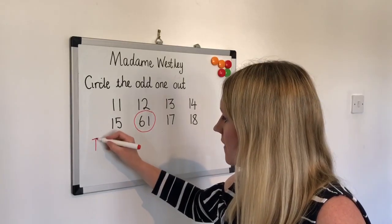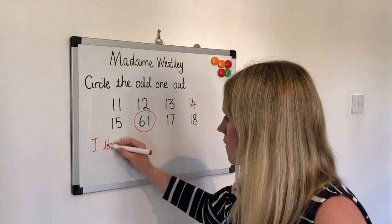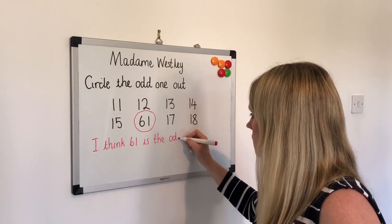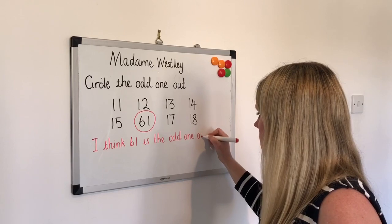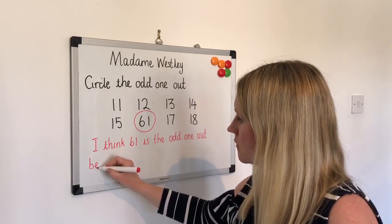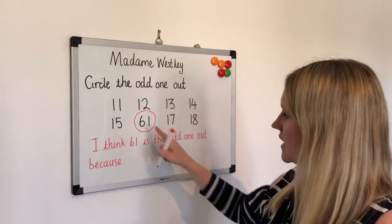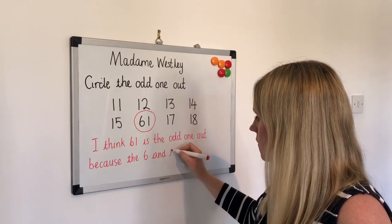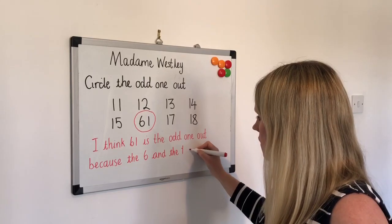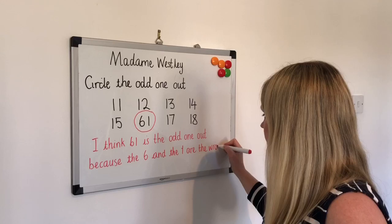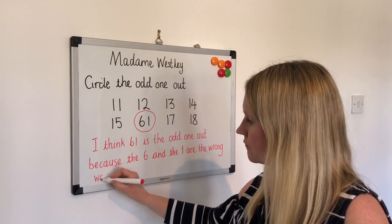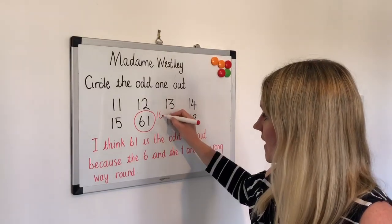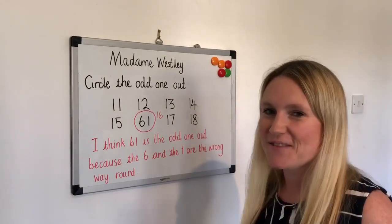So you might write: I think 61 is the odd one out because the 6 and the 1 are the wrong way round. If it had been a 1 and a 6, that would have gone in the pattern. Well done if you got that one right.